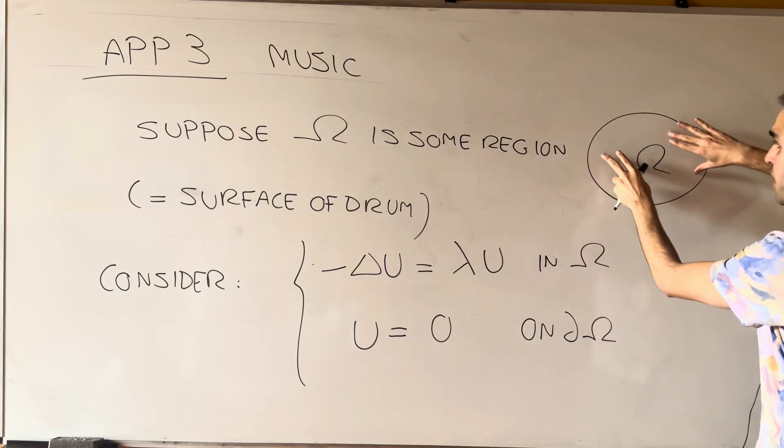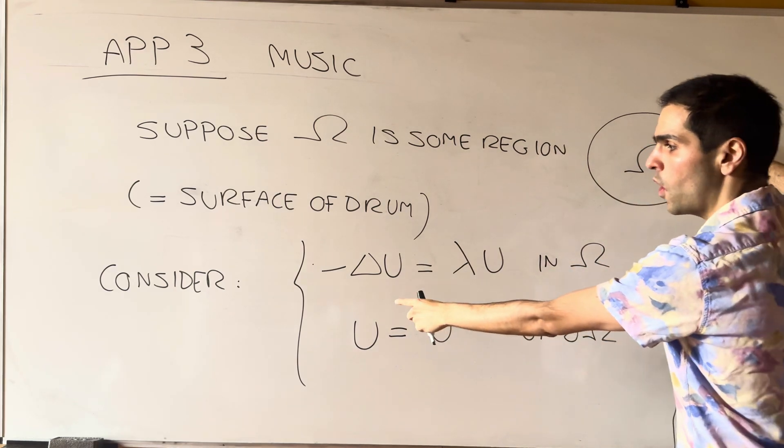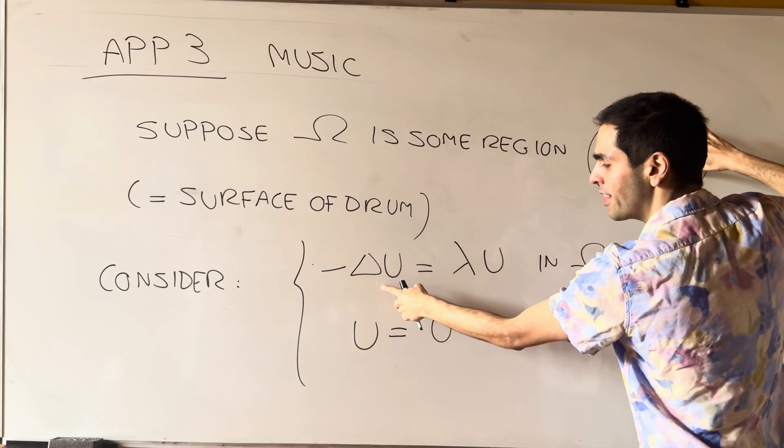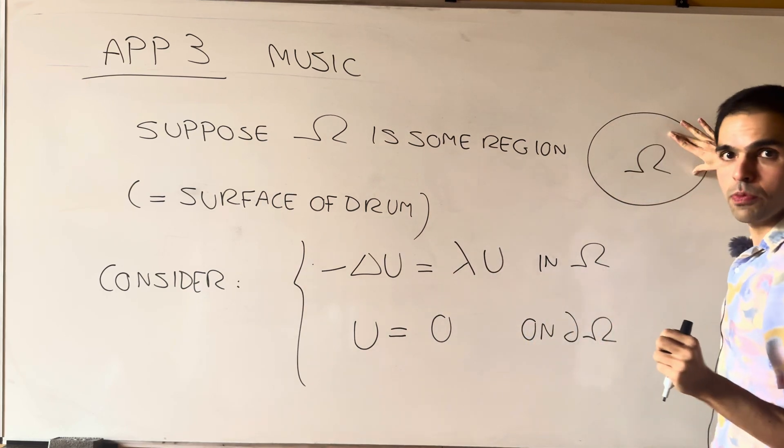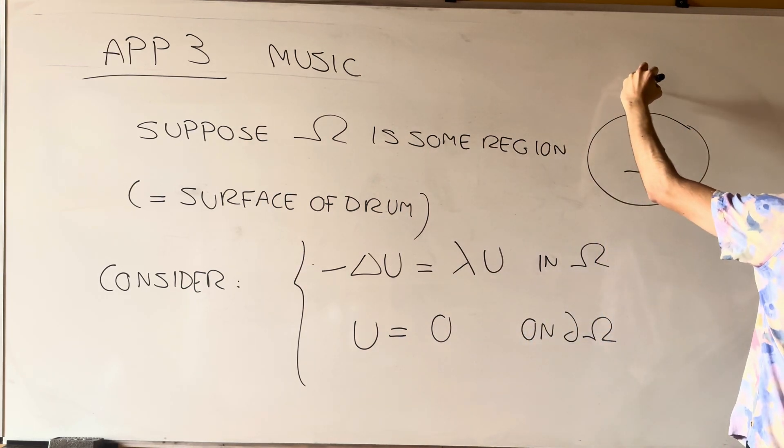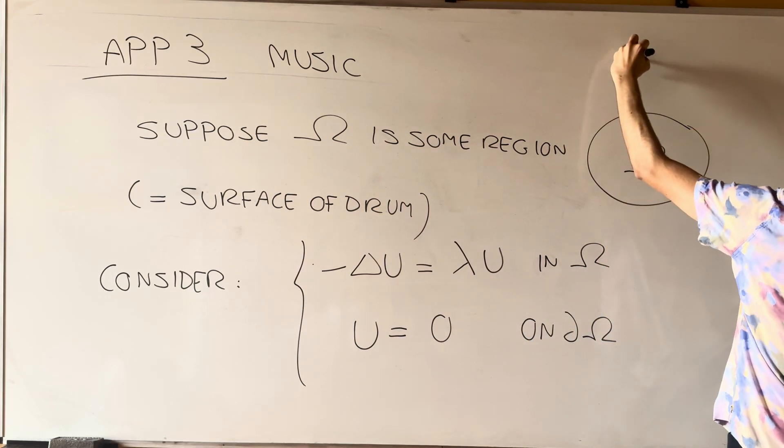So inside the region, u solves the PDE minus Laplace is some multiple of u, and on the boundary, u is 0.